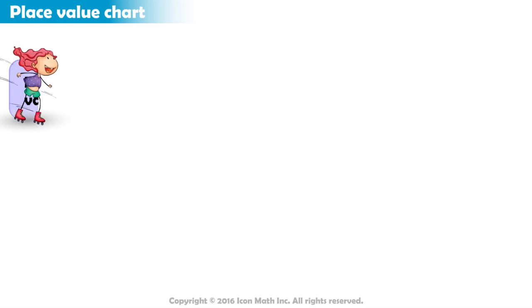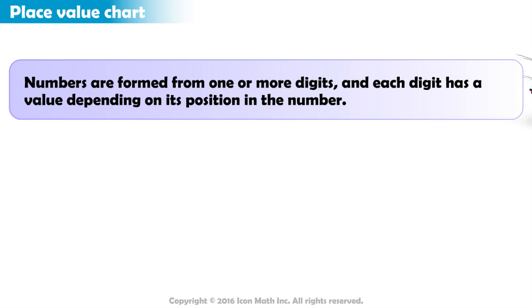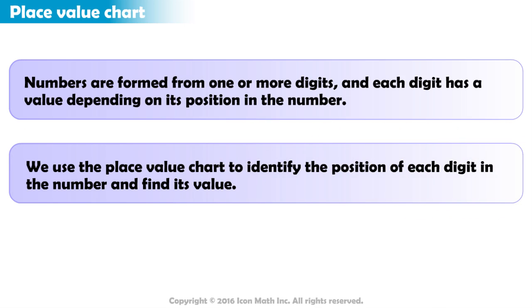In summary, numbers are formed from one or more digits, and each digit has a value depending on its position in the number. We use the place value chart to identify the position of each digit in the number and determine its value.